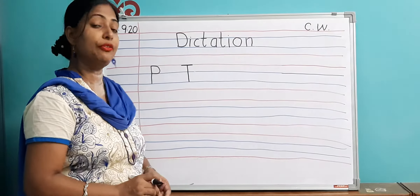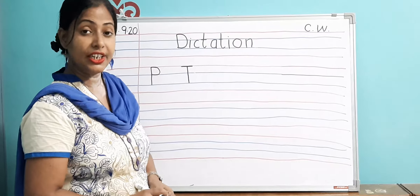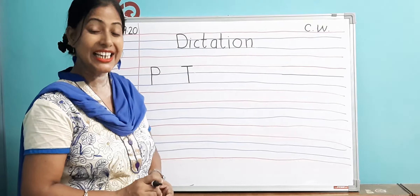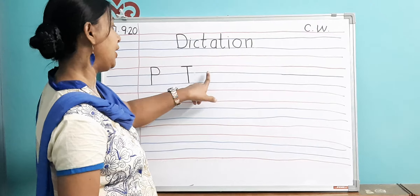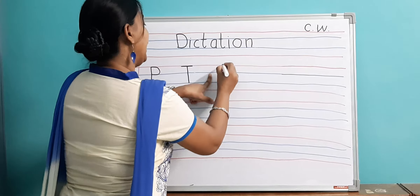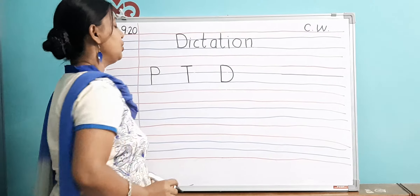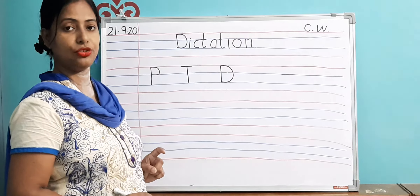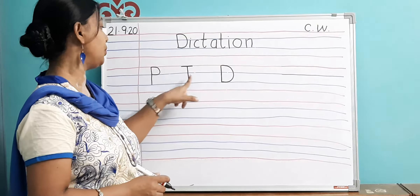Now the next alphabet is D — D for duck. How you write D: standing line and then a semicircle. This is D for duck. Always remember there should be a gap between two alphabets — don't join them. Leave a little space between each alphabet.